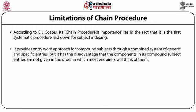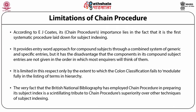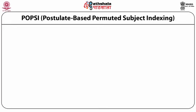According to E.J. Coates, chain procedure's importance lies in the fact that it is the first systematical procedure laid down for subject indexing. It is nearly though not quite mechanical in its method of working, and scores heavily over earlier practices on grounds of economy. It provides entry-word approach for compound subjects through a combined system of generic and specific entries, but has the disadvantage that components in compound subject entries are not given in the order in which most inquirers will think of them. The very fact that the British National Bibliography has employed chain procedure in preparing its subject index is a significant testimony to chain procedure's superiority. Till classified catalogues are in use, Ranganathan will be remembered for maximizing their efficiency by devising chain procedure.